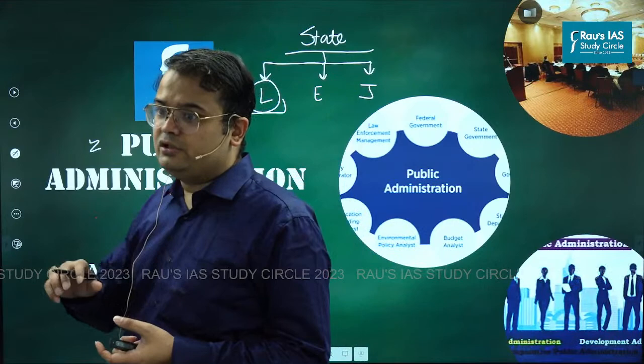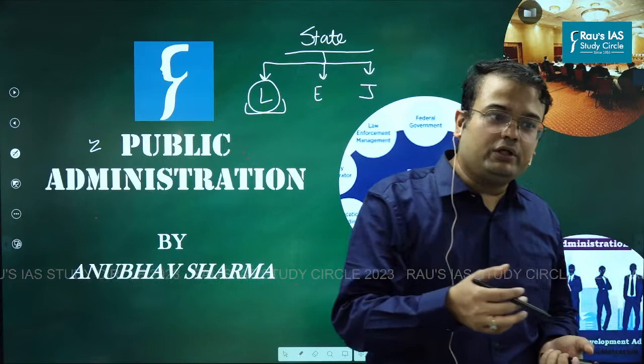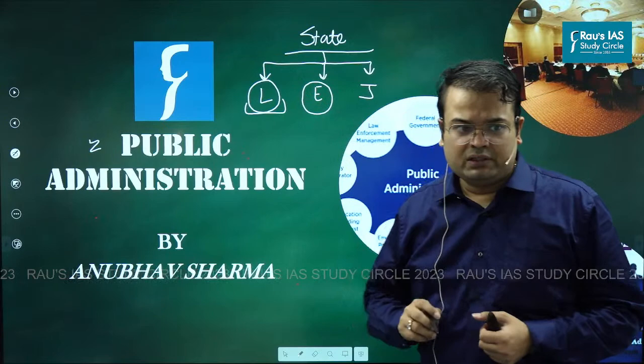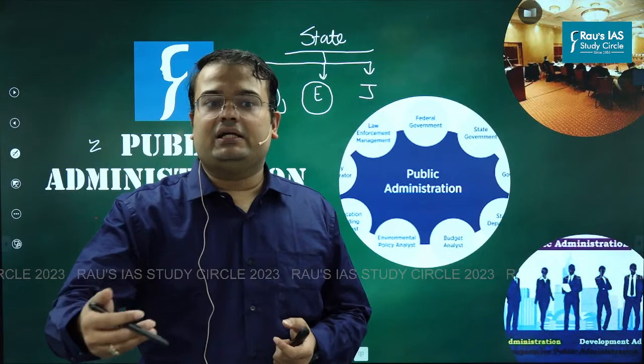It is not only about making laws — it is also about implementing laws. When you have to implement laws, that is the job of executing laws. To execute laws, we require another bunch of people who have been given the power to execute. This is the second organ called the executive. When we talk about executive, there are two types.